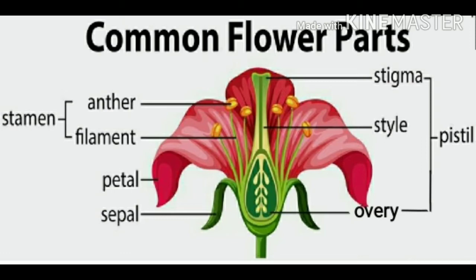Third, the petal. The petal is the colored part of a flower that gives it a unique shape. Fourth one is sepal. Fifth one is receptacle. Sixth one is stem. And seventh one is leaf.